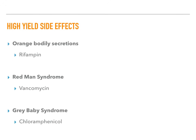For color-based side effects: orange bodily secretions — urine, tears — point to rifampin, a tuberculosis drug; this is benign. Red Man syndrome is caused by vancomycin and presents as a flushing reaction that can be prevented with antihistamines or NSAIDs. Gray baby syndrome is caused by chloramphenicol. Know these three color-associated drug side effects.